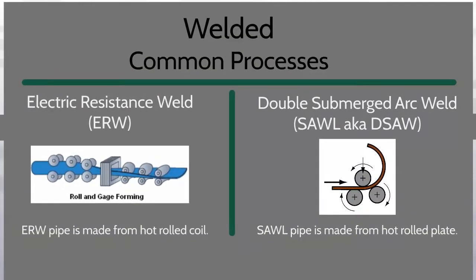Common processes for welded pipe include ERW, electric resistance weld, and SAWL, also known as DSAW, double submerged arc weld. ERW pipe is made from hot rolled coil, while SAWL or DSAW pipe is made out of hot rolled plate.